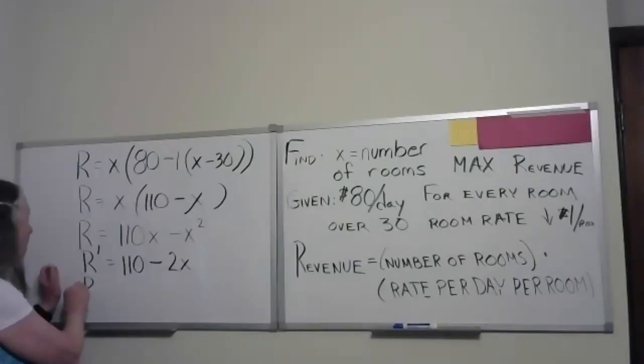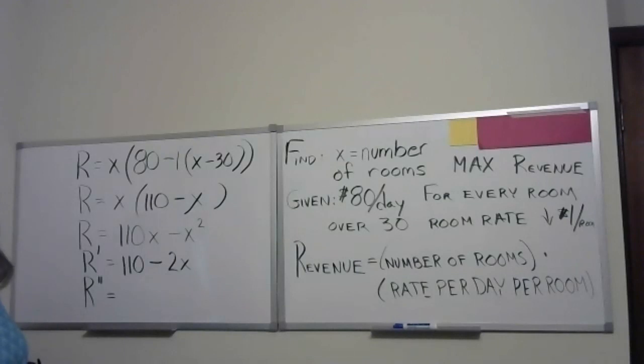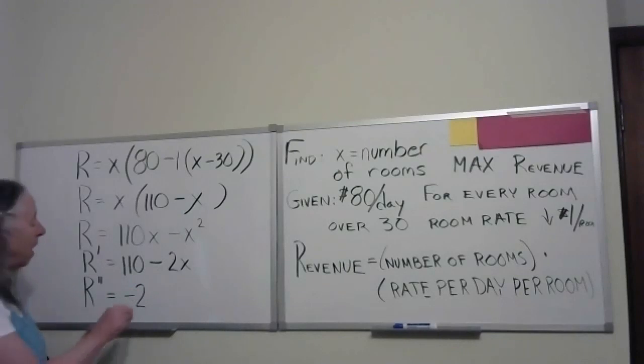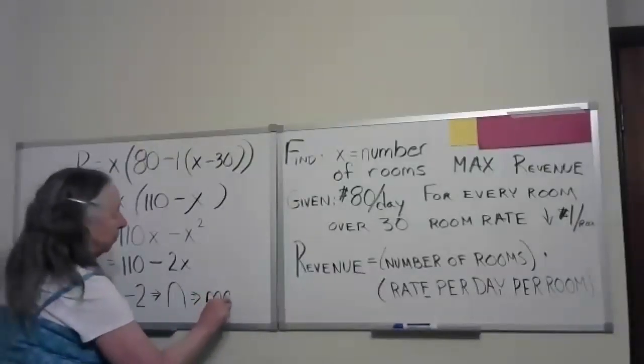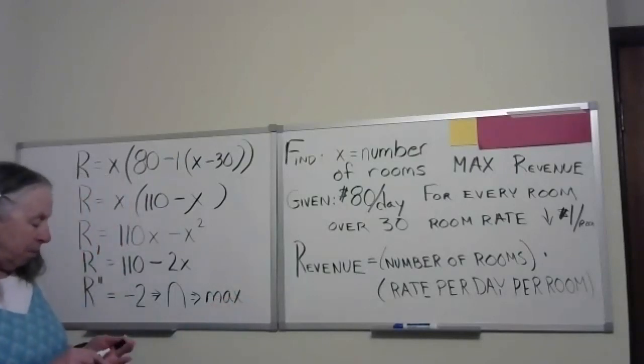And we'll go ahead and do R double prime at the same time. Alex Sam, it would just be negative 2. So that tells us concave down, which implies that it's a max. We're going to take care of your concern in a moment, Jonathan.